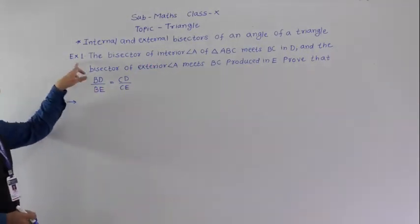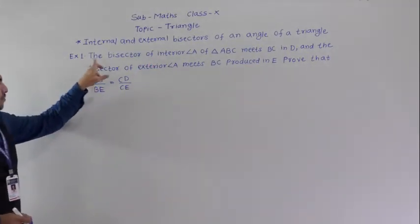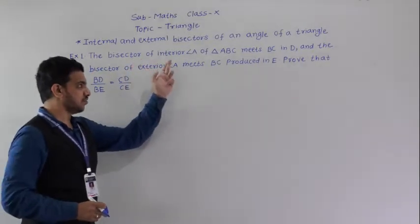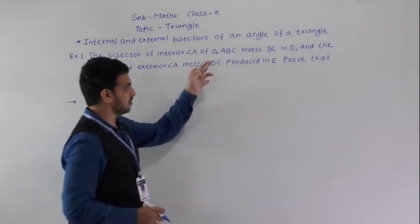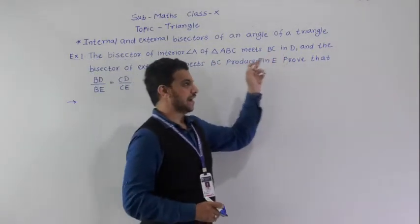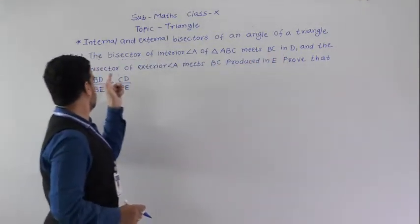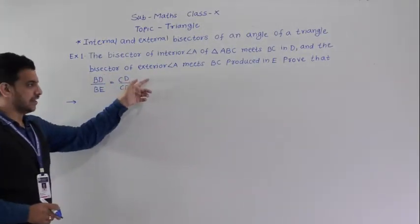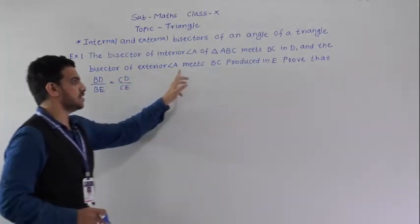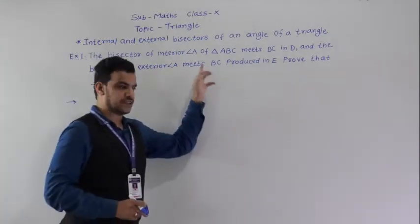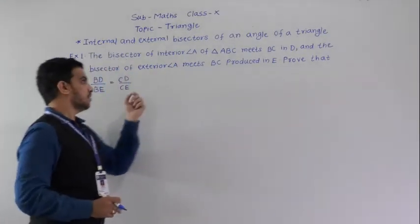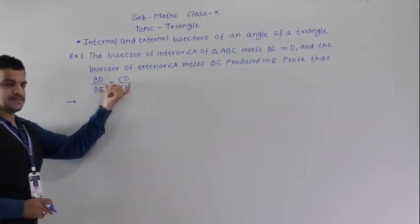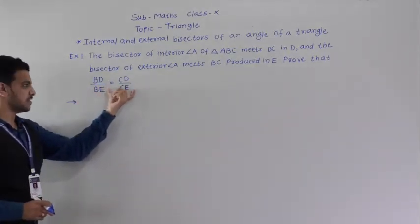The first example: the bisector of the interior angle of triangle ABC meets BC in D, and the bisector of exterior angle A meets BC produced in E. We have to prove that BD/BE is equal to CD/CE.